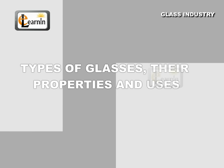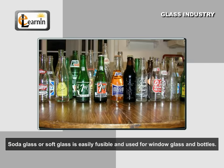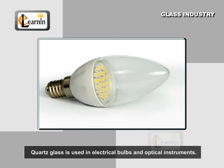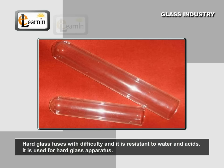Types of glasses, their properties, and uses. Soda glass or soft glass is easily fusible and used for window glass and bottles. Pyrex glass is used for laboratory glassware. Quartz glass is used in electrical bulbs and optical instruments. Flint glass is used in optics. Hard glass fuses with difficulty and is resistant to water and acids. It is used for hard glass apparatus.